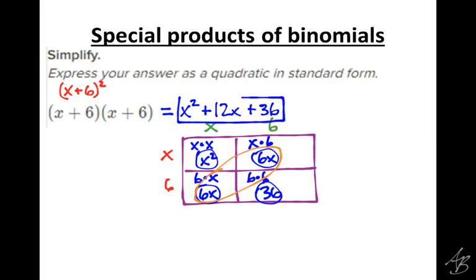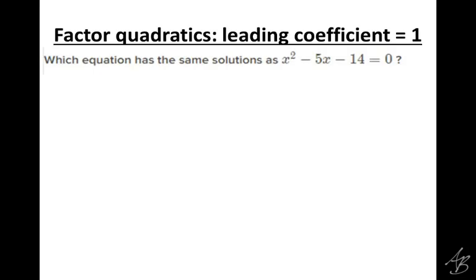Adding those together: x squared, then 6x plus 6x gives us 12x, and then 36. In both of these topics in Khan Academy, it doesn't say to use an area model, but it's the type of problem we've been using area models for. We're not going to be grading your work, so you might do a little bit of shorthand just to go a little quicker. Now the last one — this is a multiple choice question on Khan Academy, but I didn't put the choices up here because I want to do this by ourselves first.